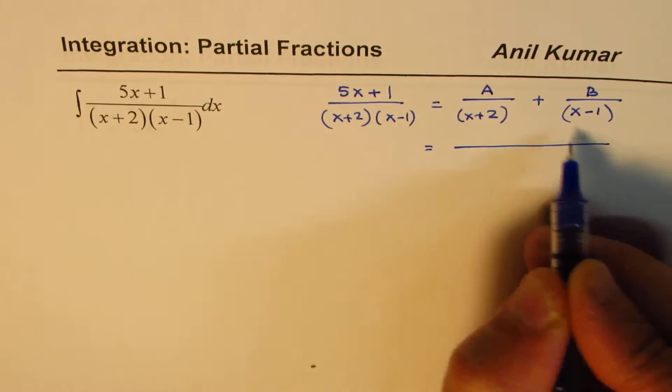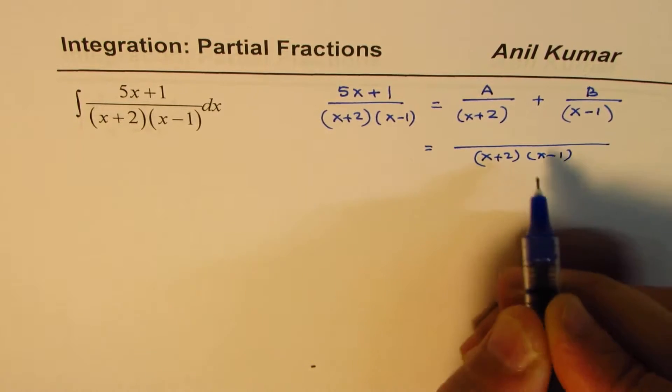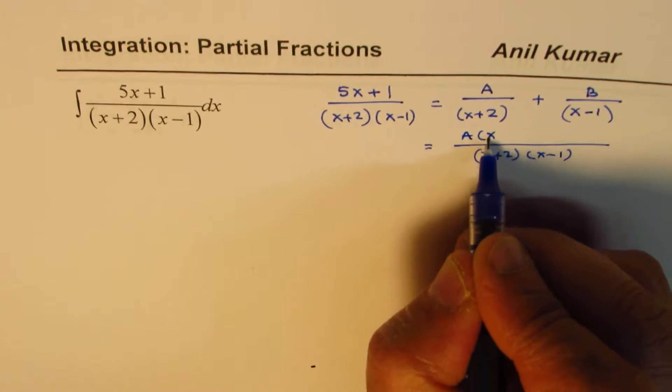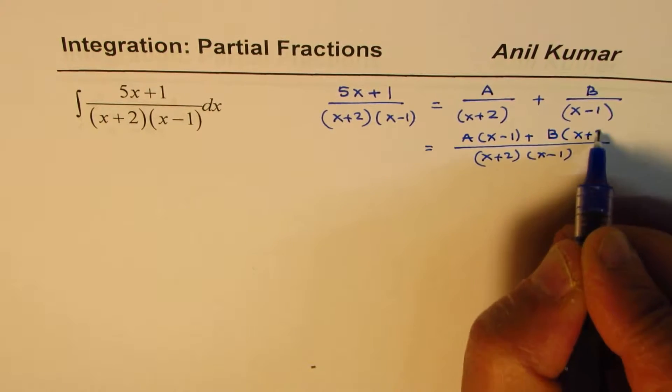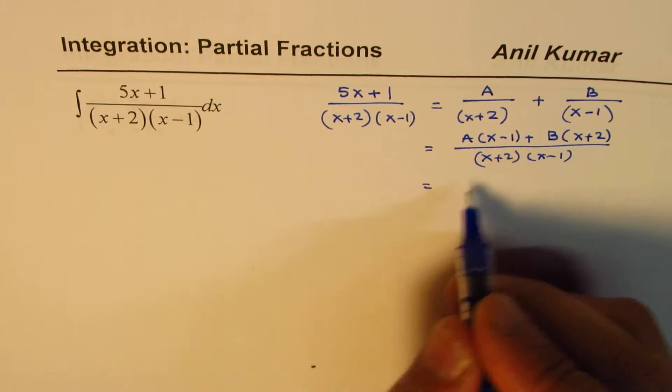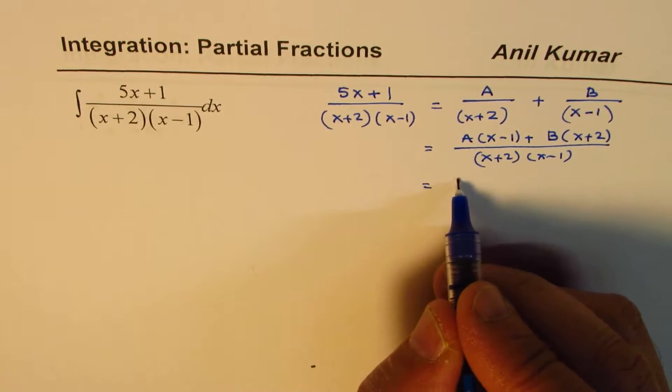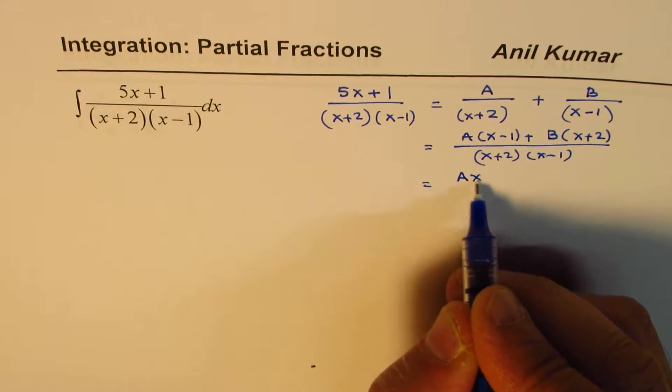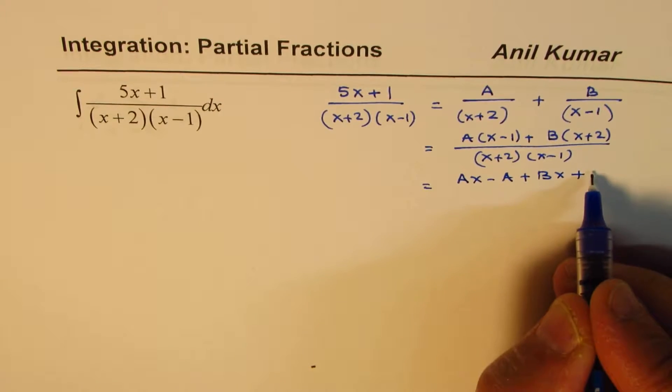Now, the right side, if I take the common denominator of x plus 2 times x minus 1, I get a times x minus 1 plus b times x plus 2. Now, if you open this up, you get ax and bx. So if x is common, you get a plus b. So let me just open this up. So we have ax minus a plus bx plus 2b.